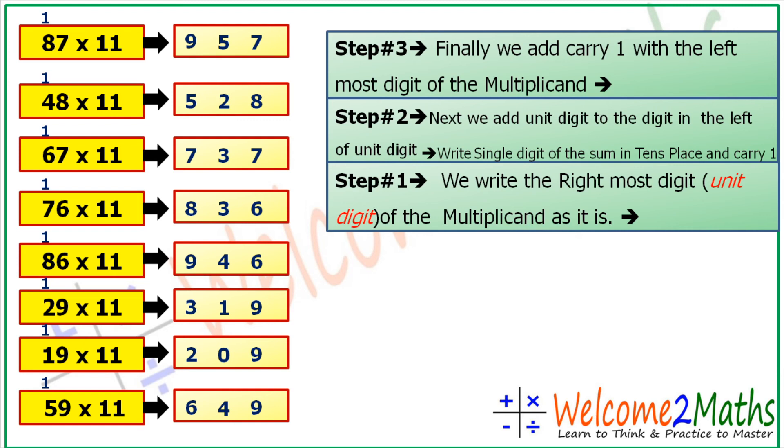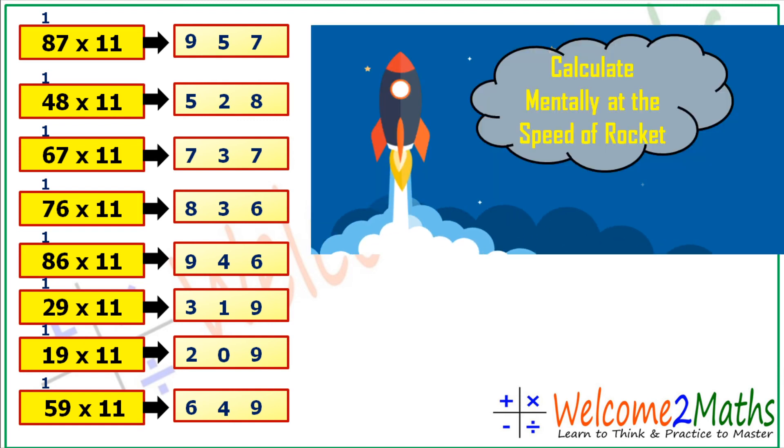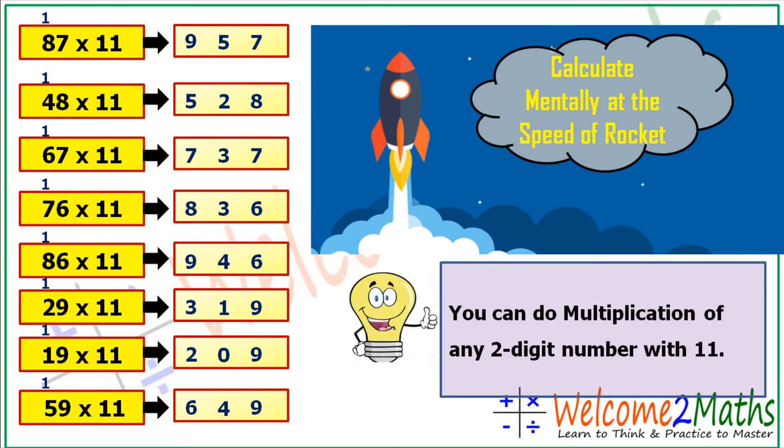So how is it? It's so interesting and it's an easy method. It's called the speed just like a rocket speed. And one interesting thing is that you can do multiplication of any two-digit number with 11 now. So do this technique with your friends and family.